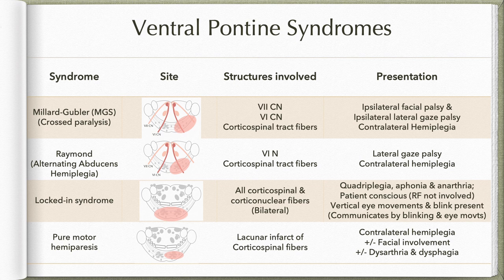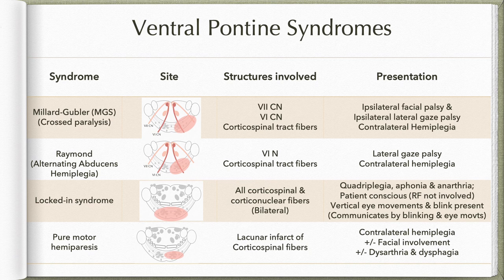Apart from medial and lateral classification, pontine syndromes are also classified as ventral, dorsal, and lateral pontine syndromes depending on which part of the pons is involved. Millard-Gubler syndrome is a classic example of crossed paralysis, where the sixth and seventh nerves as they emerge at the pontomedullary junction, plus the basilar part of the pons, are affected. The patient presents with ipsilateral facial palsy, ipsilateral lateral gaze palsy, and contralateral hemiplegia.